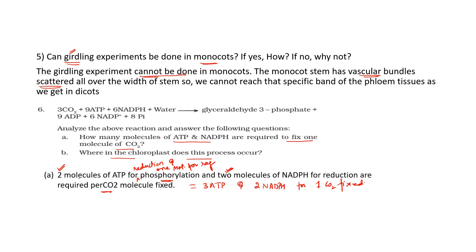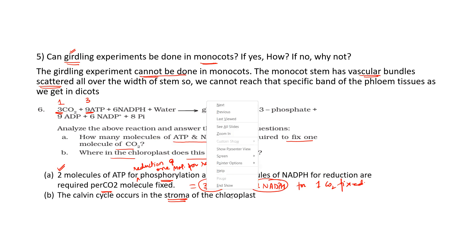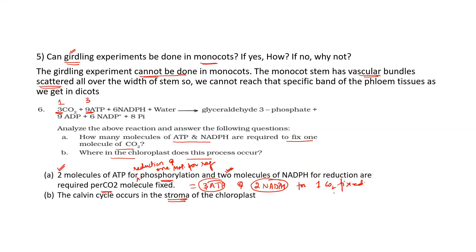Where does this reaction take place? It occurs in the stroma of the chloroplast. You can calculate from here as well — for three carbon dioxide molecules we use nine ATP, so for one carbon dioxide we use three. We are using three ATP and two NADPH: two ATP used in reduction and one ATP used during regeneration.